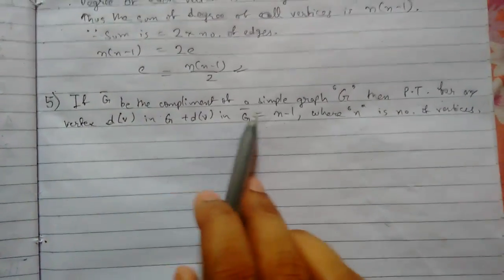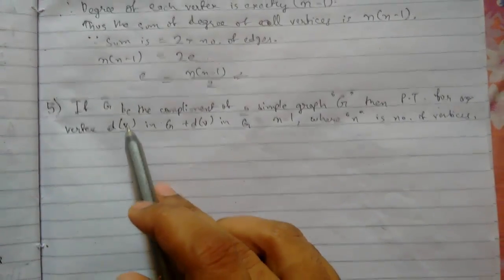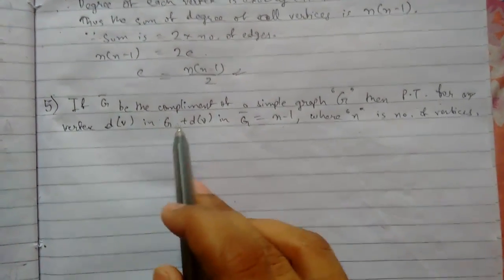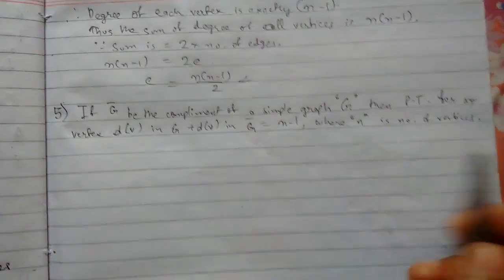If g bar is a complement of a simple graph g, then prove that for any vertex, degree of vertex in g plus dv in g bar is equals to n minus 1 where n is the number of vertices.